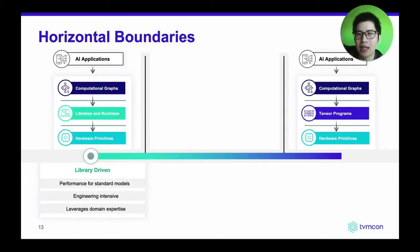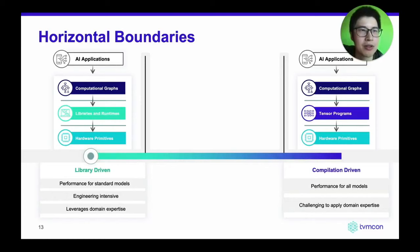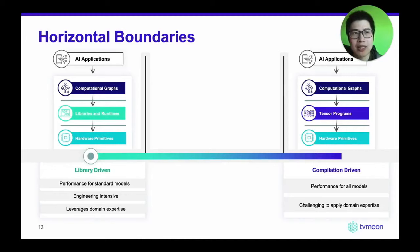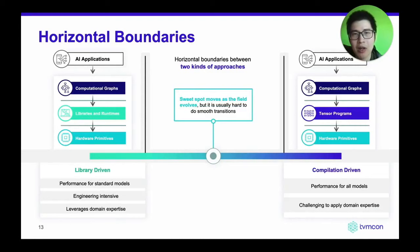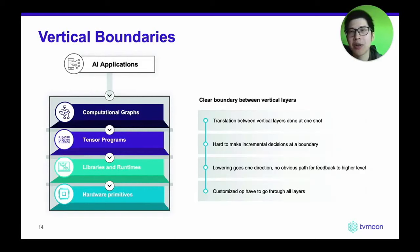We also start to see challenges with this multi-stage lowering approach. There are two kinds of boundaries that prevent us from continuously innovating. The first is a horizontal boundary. Solutions are either library-driven — relying on standard libraries like cuDNN, which is easier for standard models but engineering-intensive to build — or compilation-driven, which brings more automation and broader model coverage but makes it hard to apply domain knowledge. The sweet spot actually lies in between, combining both library-driven and compilation-driven approaches.